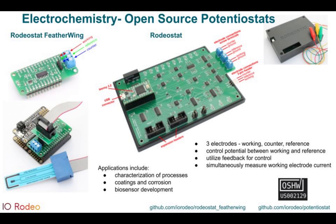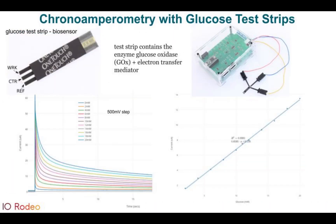You can also study coatings or corrosion, and a big application of these is in biosensor development. As an example of what a biosensor might be, you might think of something like the glucose test strip — commercially available for monitoring blood sugar. These test strips contain, on the working electrode, an enzyme — glucose oxidase — and an electron transfer mediator, which allows them to work as a glucose sensor.